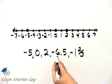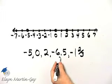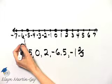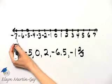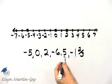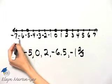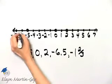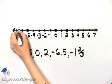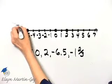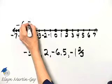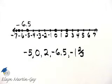Now let's graph negative six and five-tenths. Now here's negative six, and here's negative seven. Negative six and five-tenths is halfway between negative six and negative seven. So there is the graph of negative six and five-tenths, right there.